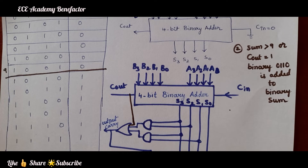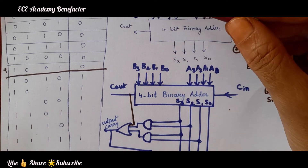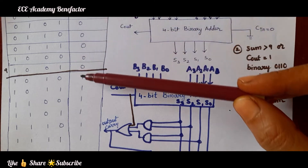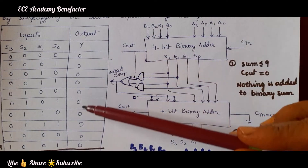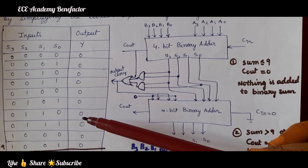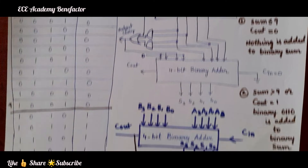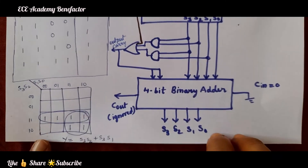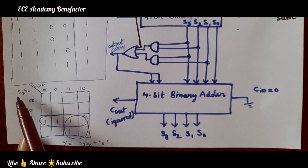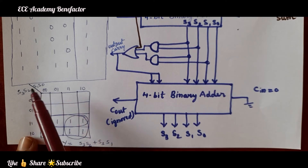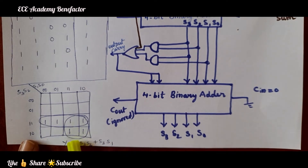Now we need to simplify the K-map for the Y column. We need to simplify the K-map. How many variable K-map will we use? A 4-variable K-map for S3, S2, S1, S0, which I have drawn here. This K-map will be simplified to give the expression for Y.